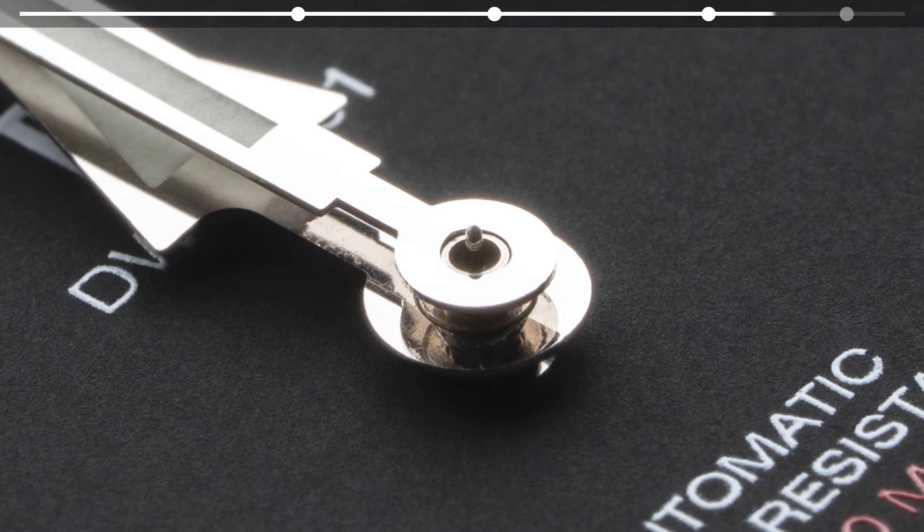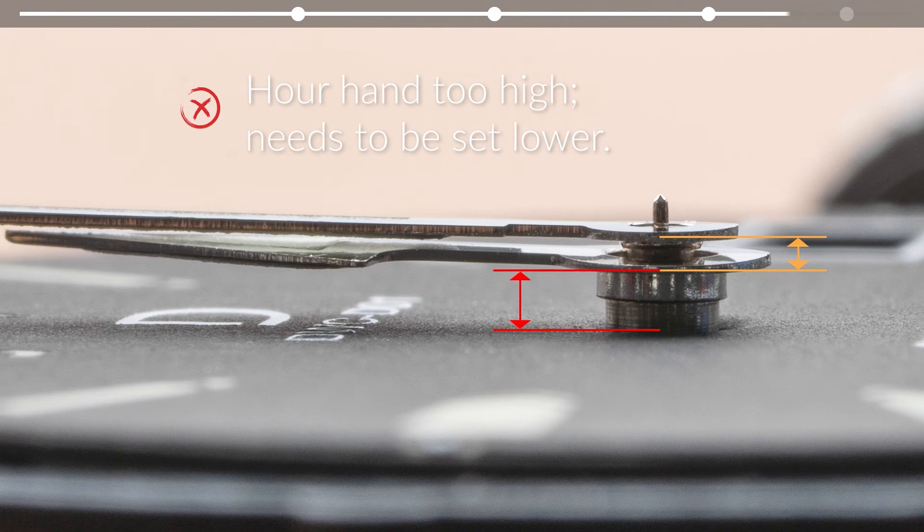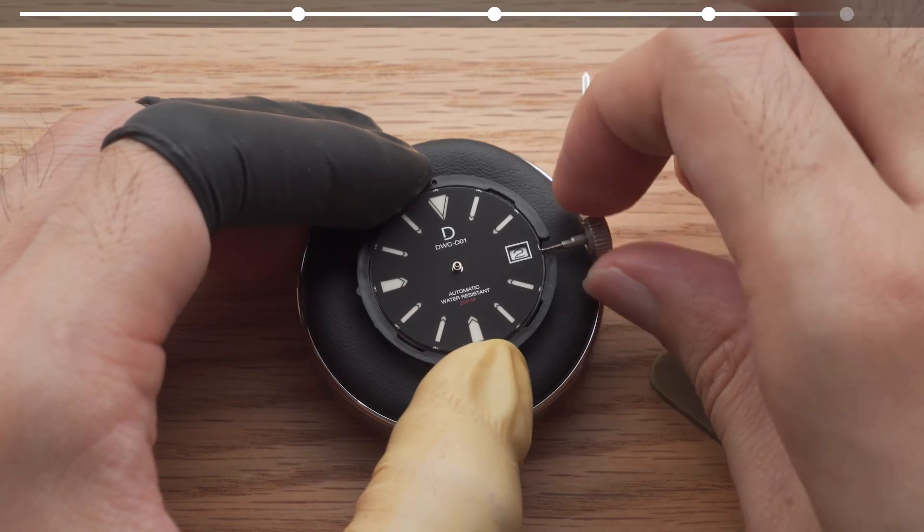If you are seeing this where the minute hand is sitting right on the hour hand and the hour hand has quite a gap between it and the dial, your hour hand is not set low enough. You'll have to remove your minute hand and adjust your hour hand's height.